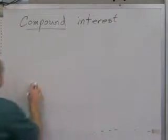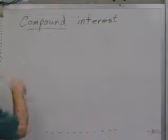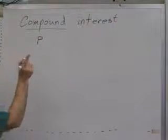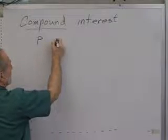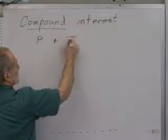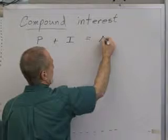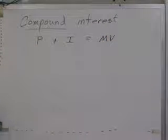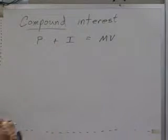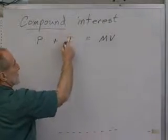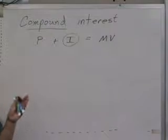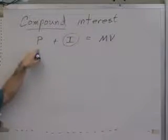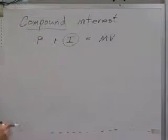Now, compound interest works this way. In simple interest, we start with a principle, we earn interest, and we end with a maturity value. Those are the terms in simple interest. And the reason we do it this way is because it's easy to calculate simple interest. Just multiply the principle times the rate times time. And then we can add it to our principle, and that's our maturity value.